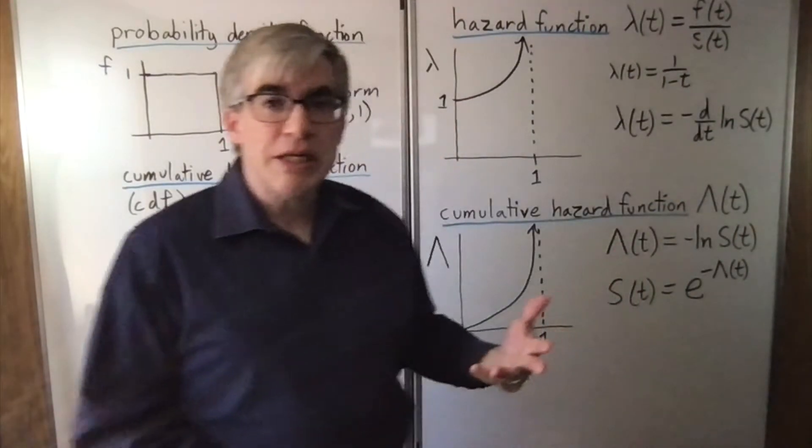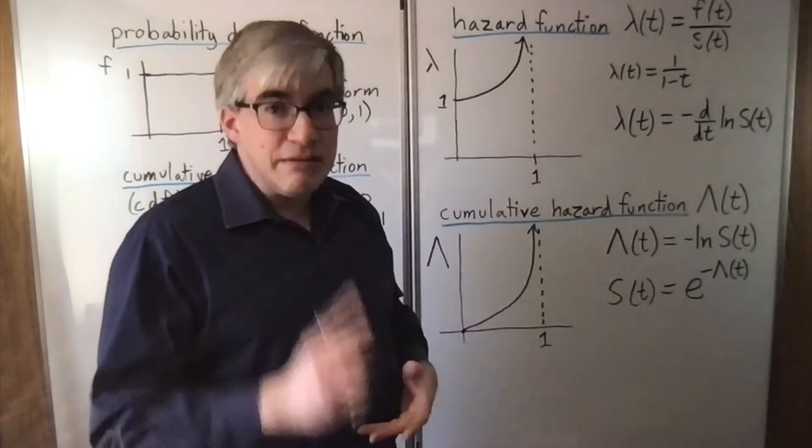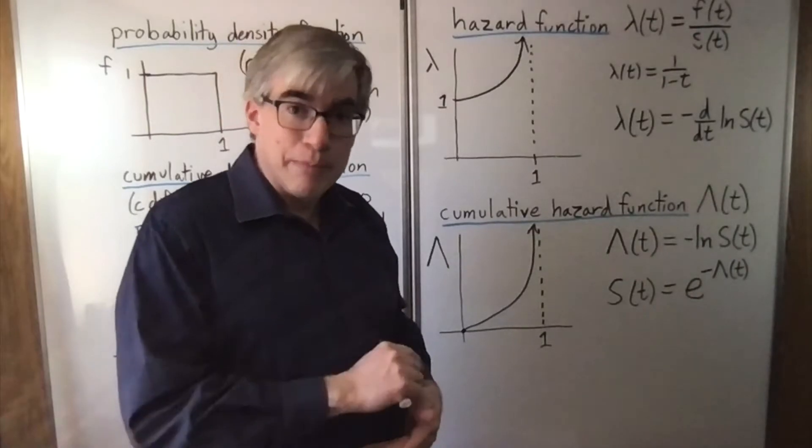What does that mean? It's the instantaneous probability per time of the event happening, given that it has not yet happened.